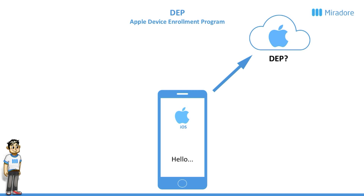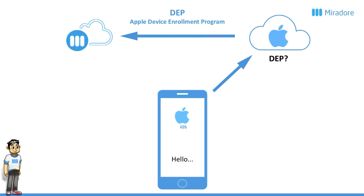If the answer to this is no, which it is on all consumer devices, you'll just get the next step in the wizard asking you whether you want to use Siri and so on. But if the answer is yes, then Apple will hand over the device to an MDM system, for instance Miradol Online, and this MDM system will then send a configuration profile to the device and set up the device for the user.